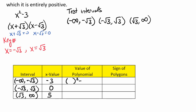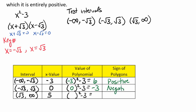We're going to plug in each value and see what we get. When we plug negative 3 into the polynomial, we get a value of 6, which is positive — so the sign of the polynomial there is positive. When we plug in 0, that gives us negative 3, so the sign is negative. And when we plug in 5, we get a value of 22, which is positive.